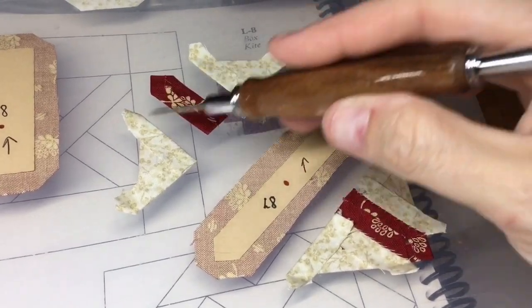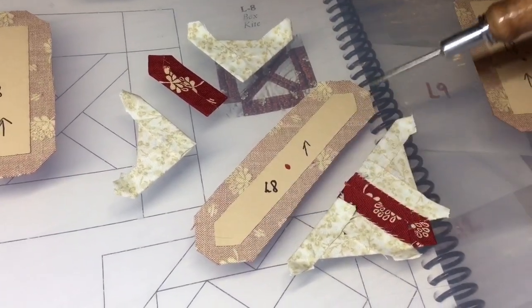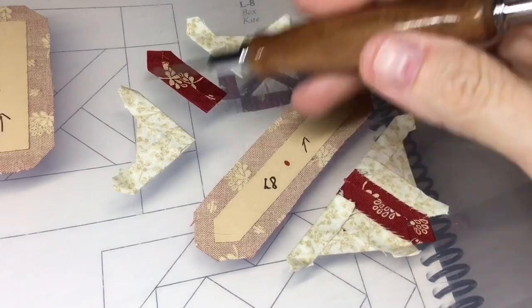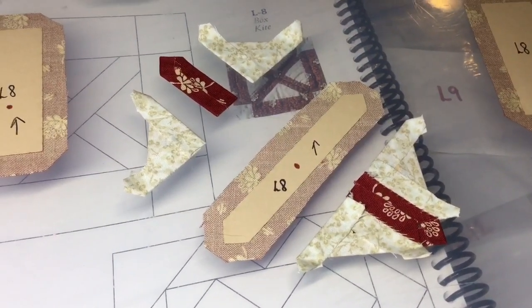I will finish assembling this section, and then I will baste this center so I can finish assembling my center block.